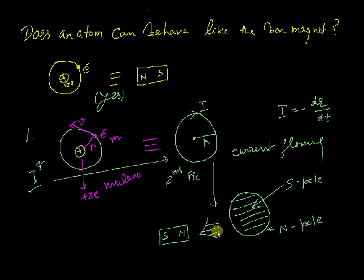So by this way we can say that one atom which has one unpaired electron in outermost orbit can behave like the bar magnet.